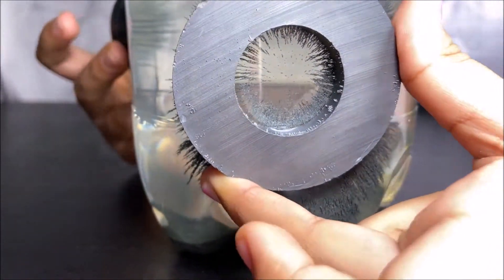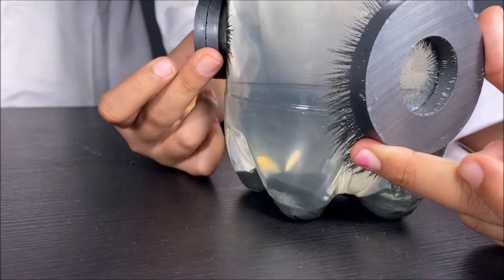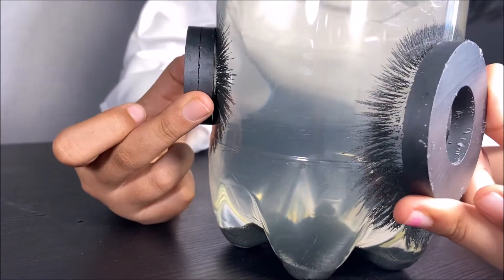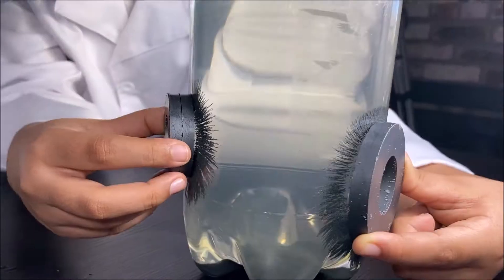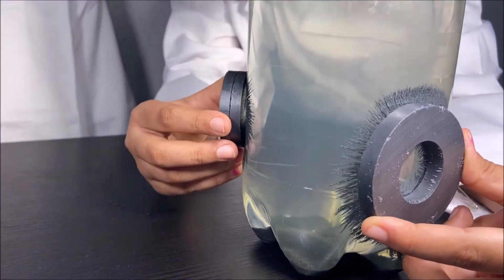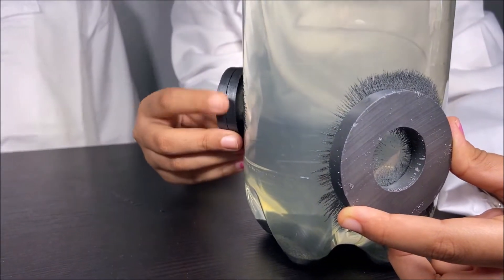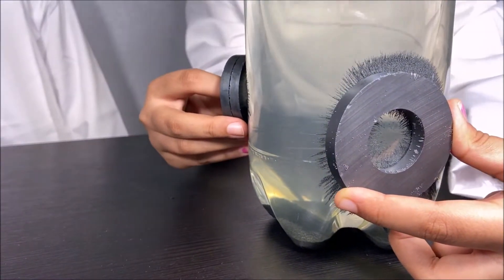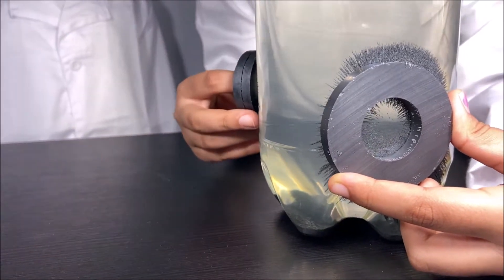Wow! You can see that the iron filings align with the shape of the magnetic field. Cool, amazing! They're attracting to the magnet because the iron filings are made out of iron. So they're attracting to the magnet and they're aligning with the shape of the magnetic field of the magnet.